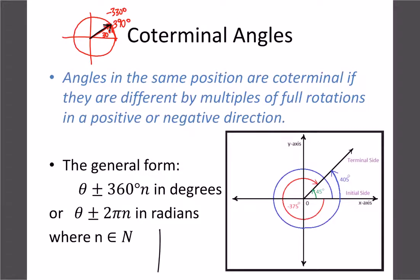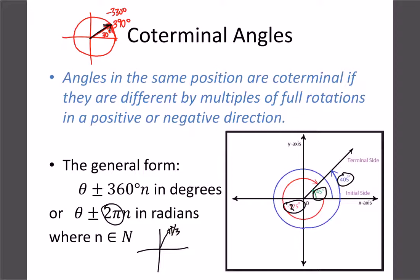In radians, co-terminal angles are found by adding or subtracting 2π, which is equivalent to 360 degrees. For example, 45 degrees plus 360 gives 405 degrees, and minus 360 gives negative 315 degrees — all the same angle. The diagram shows this clearly: the same terminal position is reached regardless of how many full rotations you add or subtract.